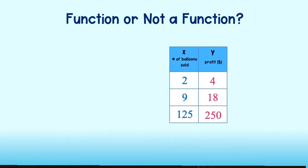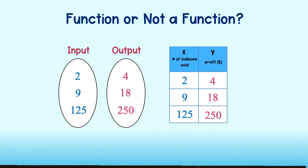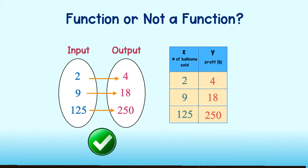To test this, we draw a mapping diagram where the first oval will contain the inputs and the second will contain the outputs. It will also help to put the values in order. We have 2, 9, and 125 in the domain, and 4, 18, and 250 in the range. Looking back at my table, 2 is paired with 4, 9 is paired with 18, and 125 with 250. We see that only one arrow is coming from each member of the domain. Since each input value is paired with only one output value, this relation is a function.